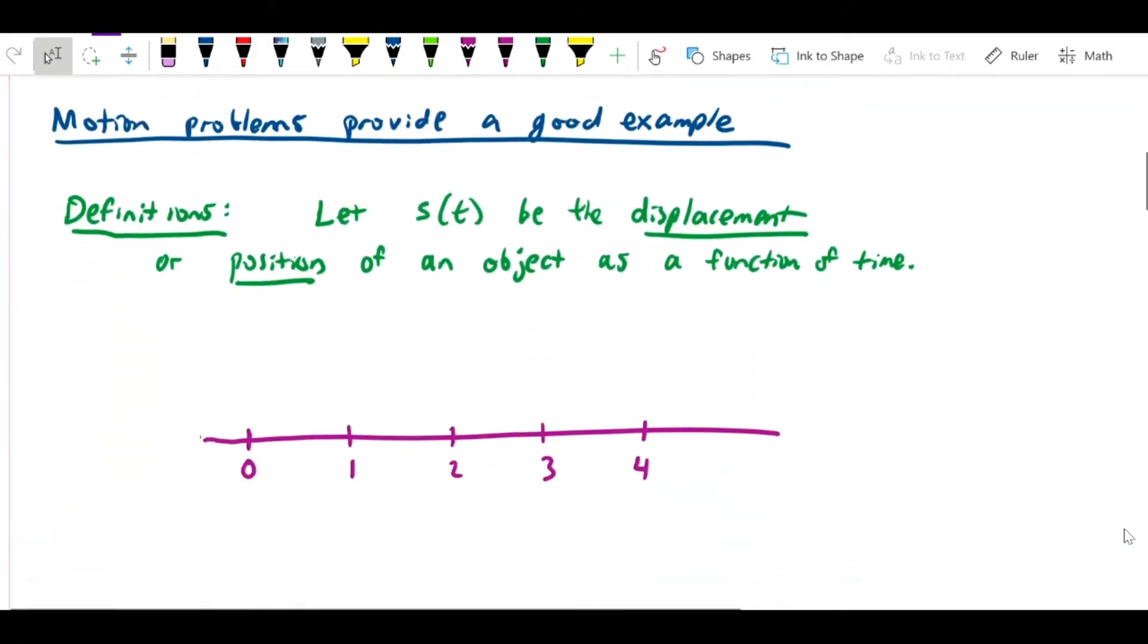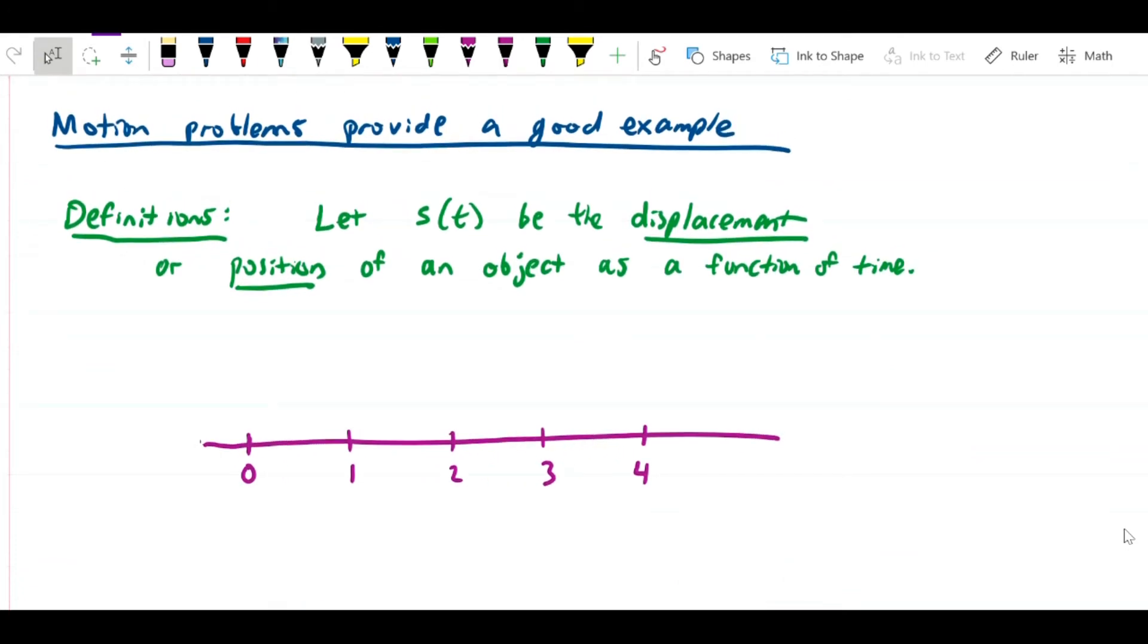Let me put up a generic motion problem and a definition. We're going to define a function s(t) - I don't know why we use the term s, but we do. S(t) is the displacement or position of an object as a function of time.